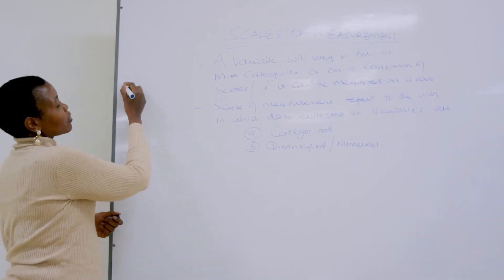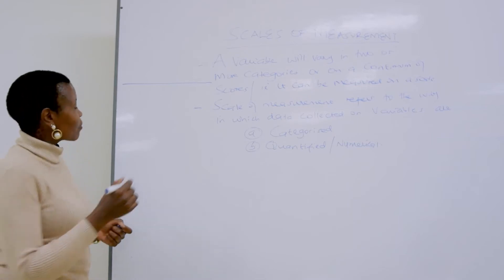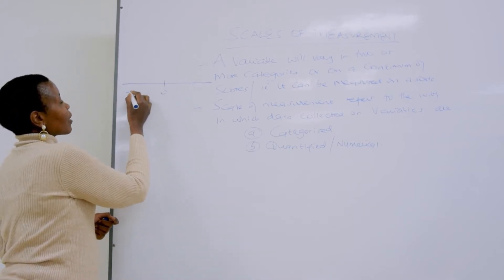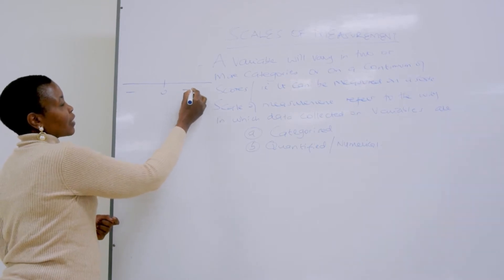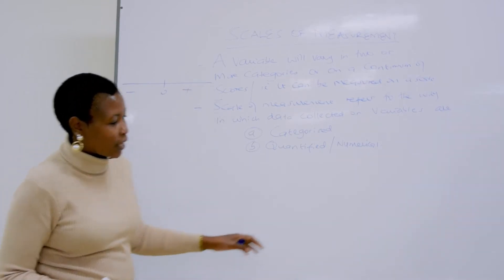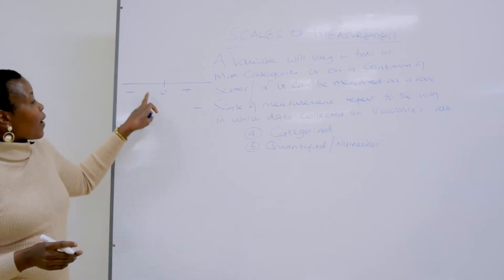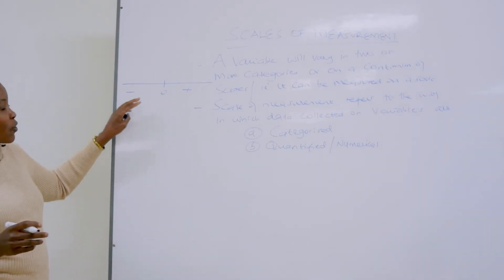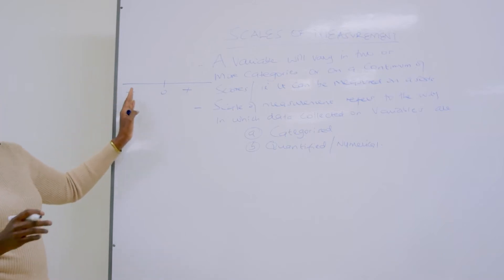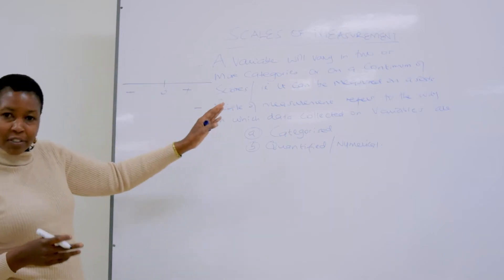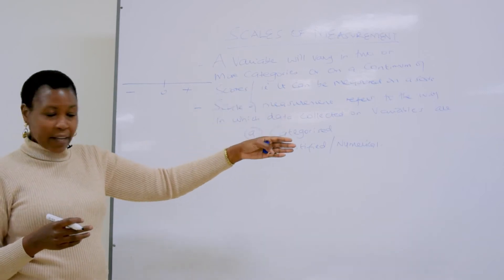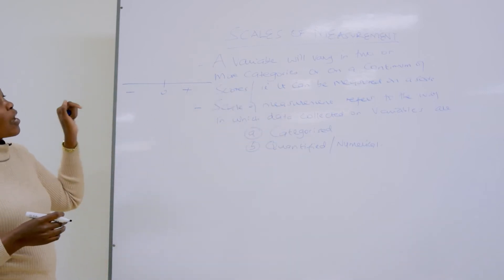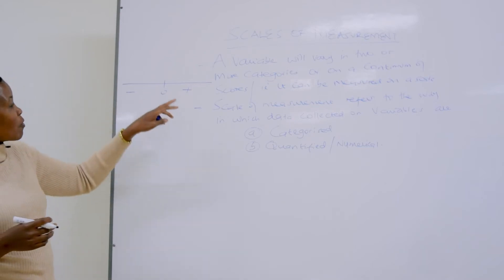When we talk about a continuum, remember the number line — we have the negatives on one side and positives on the other side. So a continuum refers to scores that can vary from the negative side to the positive side, up to infinity. When we say that a variable will vary in two or more categories, we can have variables existing in categories or on a continuum.